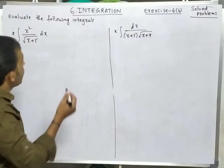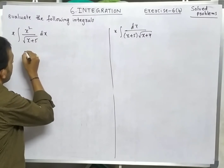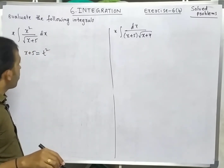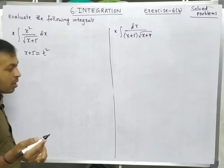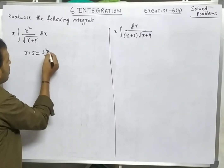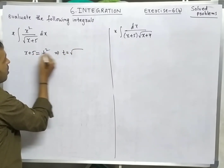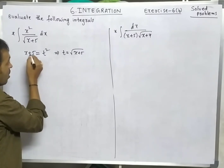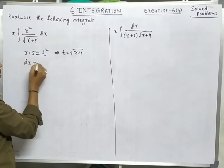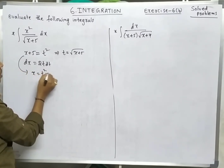If we have a square root term in the denominator, solve by taking x+5 = t². Then t = √(x+5), dx = 2t dt, and x = t² - 5. Substituting: 1/√(x+5) = 1/t, x² = (t²-5)², and dx = 2t dt — t cancels. We get 2·integration of (t²-5)² dt = 2·integration of (t⁴ - 10t² + 25) dt.